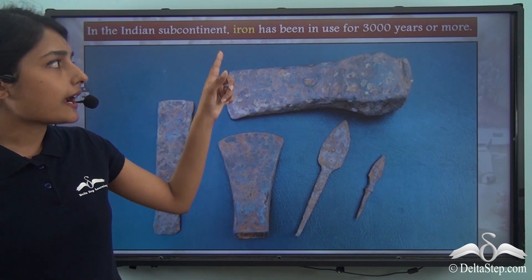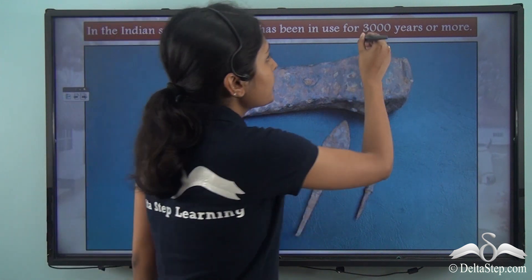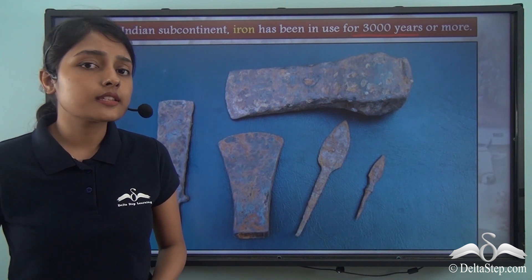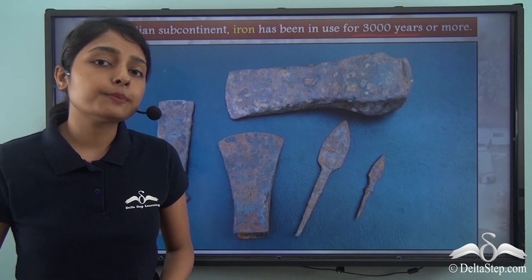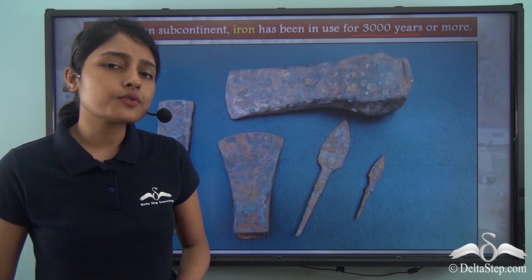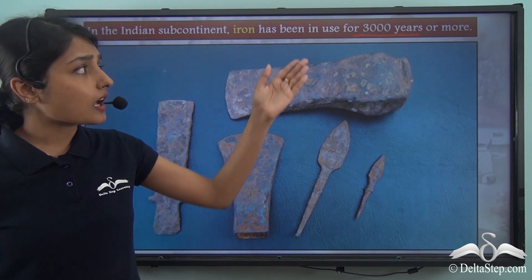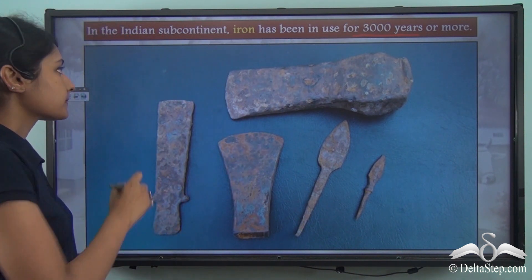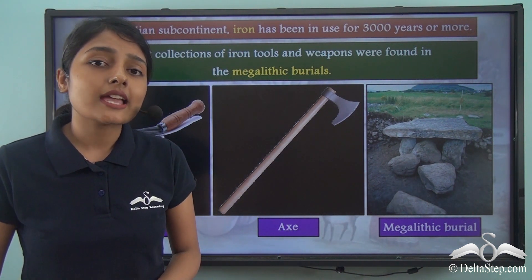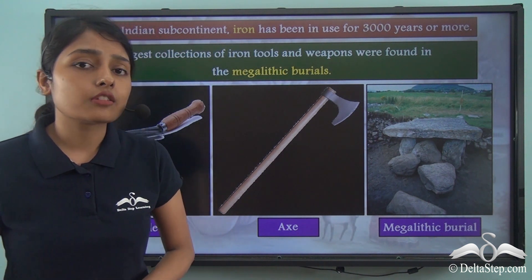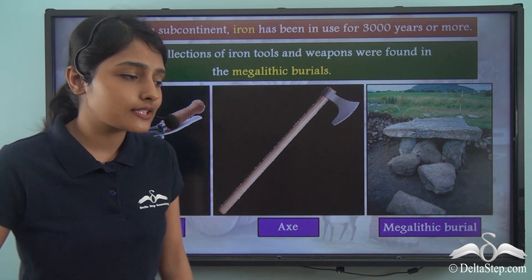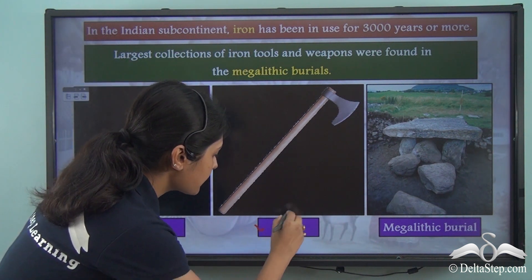Now in the Indian subcontinent, iron has been in use for 3000 years or more. So from this you can understand that the usage of iron is not new. Iron tools have been made by people in ancient and prehistoric times as well. We get to know about this from different kinds of iron tools that have been recovered from various archaeological sites, from which we learn that different sorts of iron tools like sickles and axes were used.